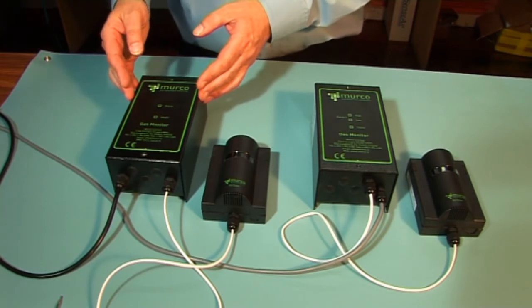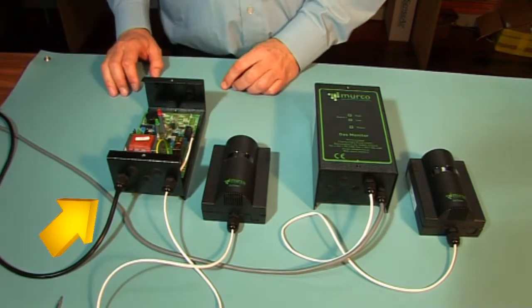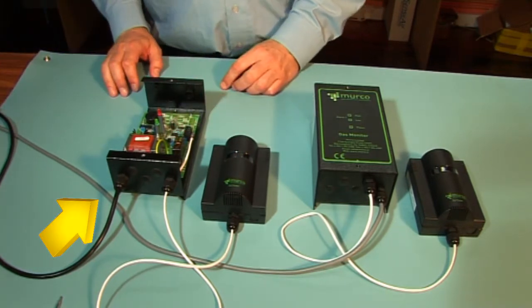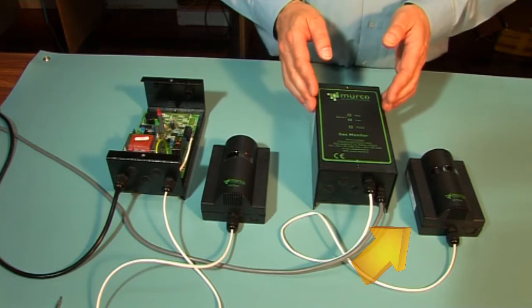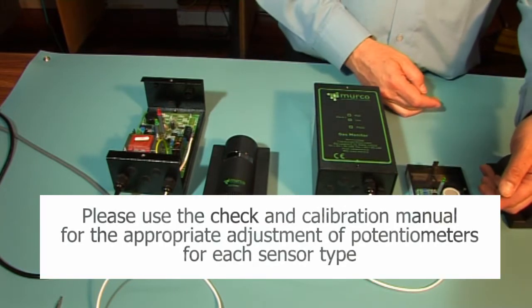On the one level systems, the calibrations are carried out on the controller, and on the two level systems, the calibration is carried out on the sensor. For demonstration purposes, we shall use a one channel unit for both the one and two level systems.